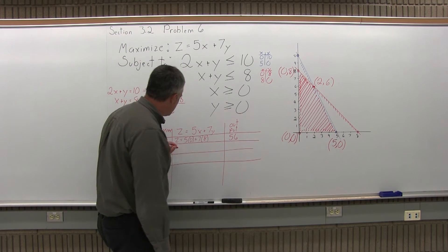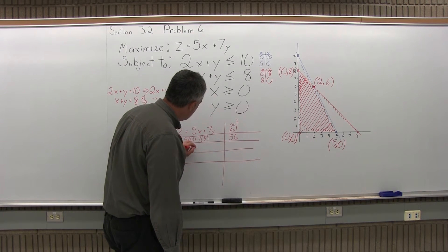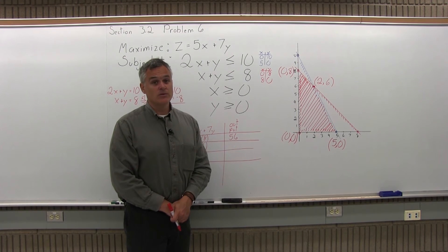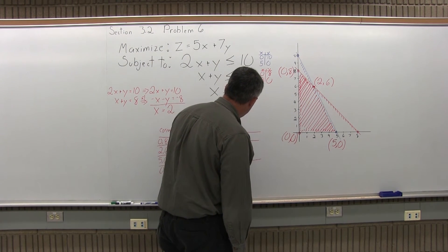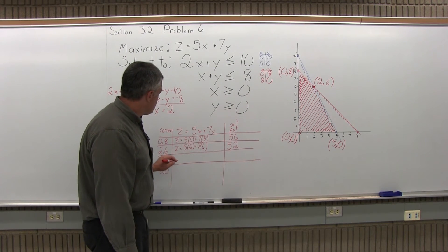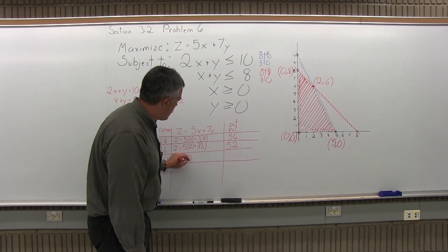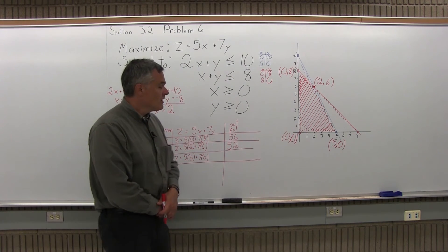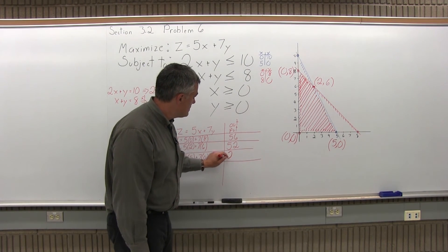The next one is 2, 6. So z equals 5 times x is 5 times 2. And 7 times y becomes 7 times 6. 5 times 2 is 10. 7 times 6 is 42. 10 plus 42 is 52. And the next corner point is 5, 0. So z equals 5 times x is 5 times 5. 7 times y is 7 times 0. 5 times 5 is 25. 7 times 0 is 0. 25 plus 0 is 25.